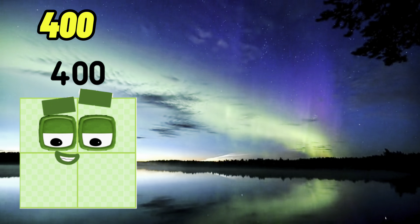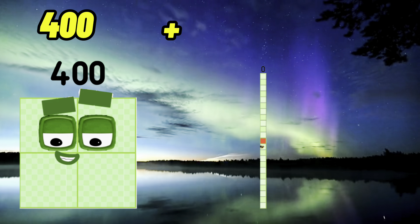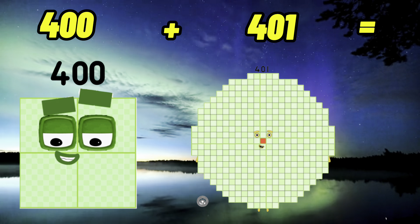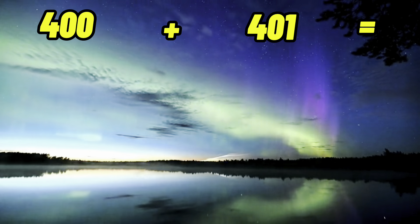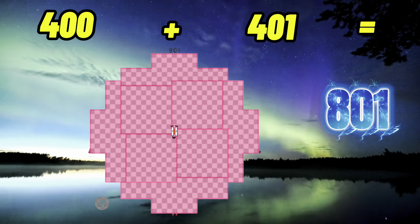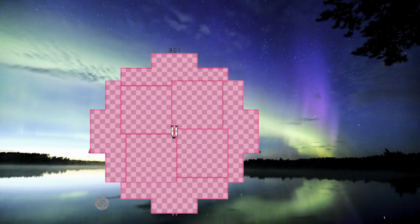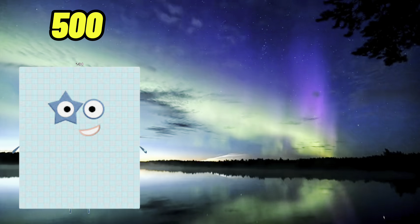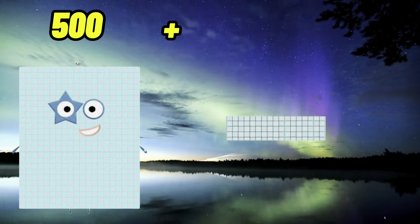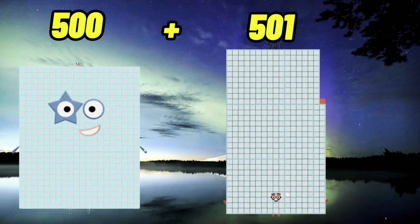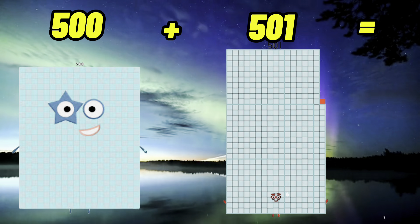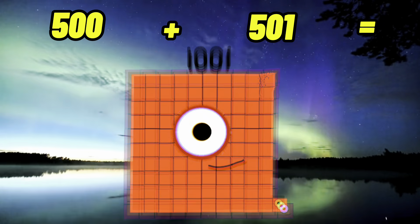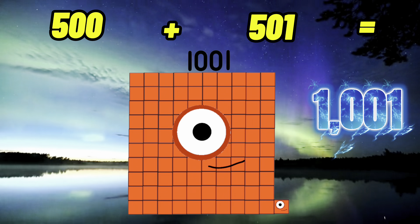400 plus 401 equals 801. Next! 500 plus 501 equals 1,001.